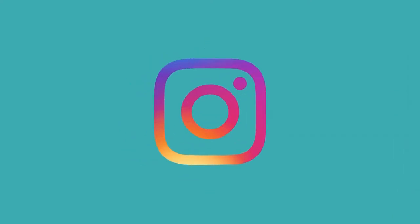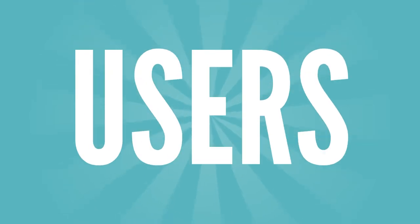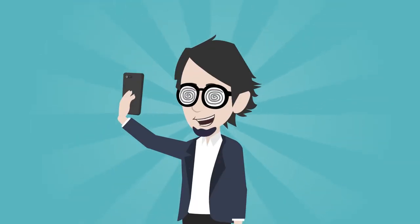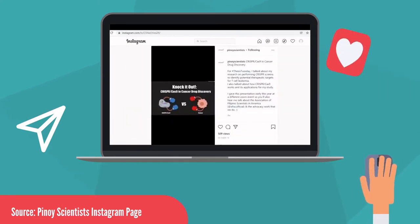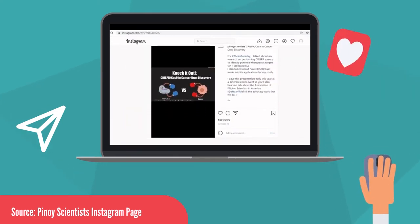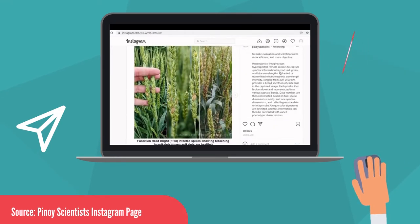Number 3: Instagram. Also owned by Meta, Instagram has 1.39 billion active users. It allows users to share photos and short videos with optional captions. Instagram's image-focused model can be utilized by researchers who can collaborate with artists to visualize data.